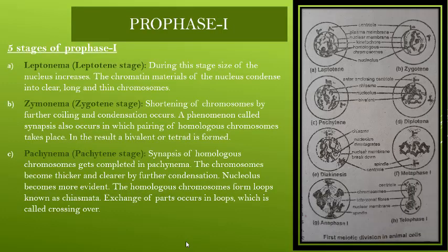Prophase 1 of Meiosis I is divided into five stages. The first stage is the Leptotene stage. What happens in it? The size of the nucleus increases, and the chromatin material, otherwise invisible inside the nucleus, will be condensed into clear and thin chromosomes. The chromosomes start to become visible in the nucleus.